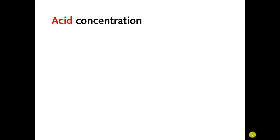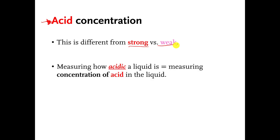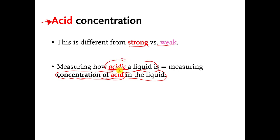This video is going to be on the long side. I want to talk about concentration of acid in a solution — in a liquid. This is different from strong versus weak acids. Measuring how acidic a liquid is is the same thing as measuring the concentration of that liquid. If you say a liquid is very acidic, that means the concentration of acid is very high. If you say it's not very acidic, the concentration is very low.